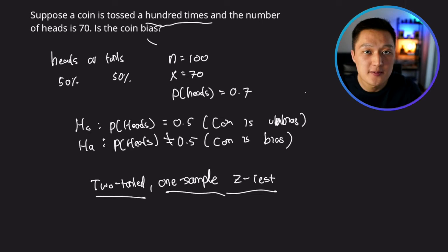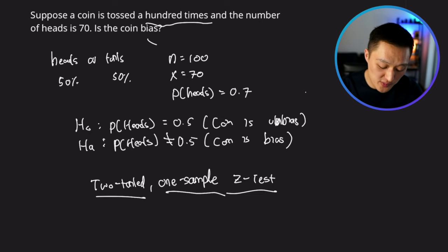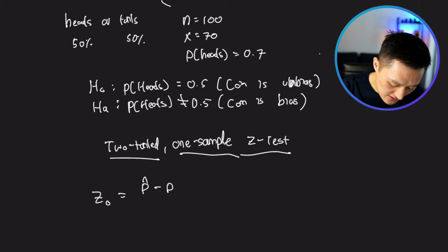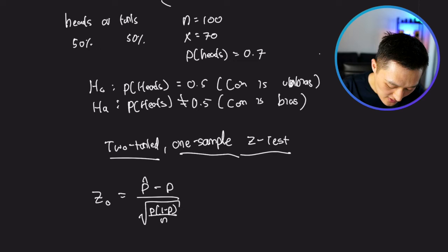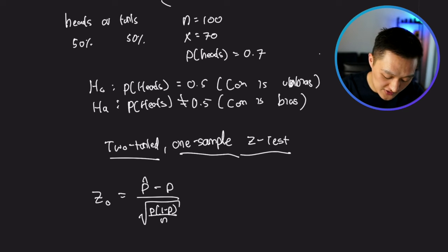An interviewer may ask why you chose a two-tailed one-sample z-test, and this is the type of justification you'd need to provide. The formula for the two-tailed one-sample z-test is: Z-naught equals P-hat minus P, divided by the standard deviation, which is the square root of P times (1 minus P) divided by N. Here, P-hat is 0.7, P is 0.5, and N is 100.